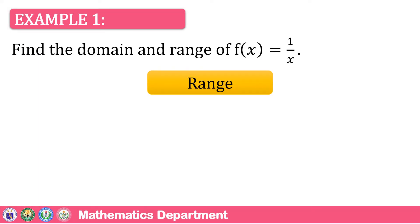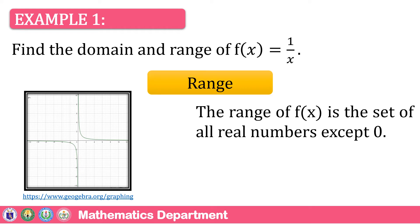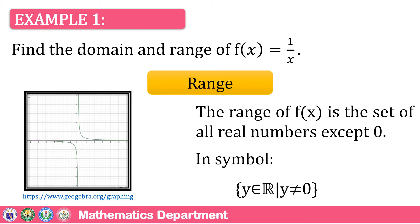To find the range of a rational function, first you can graph the given rational function, or second you can use the inverse function. In example 1, we used a graph — use GeoGebra or Desmos, which are software found online. As you can see, the graph does not pass through 0 on the y-axis (the vertical axis). Therefore, the range of f(x) is the set of all real numbers except 0. In symbol: y is an element of all real numbers such that y ≠ 0.